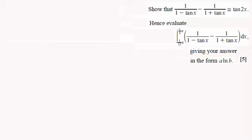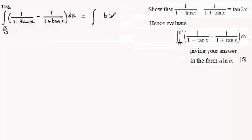If we just start by taking that integral, the integral of 1 over 1 minus tan x minus 1 over 1 plus tan x, integrated with respect to x between the limits pi upon 12 to pi upon 6. We were asked in the previous part to show that this identity was identical to tan 2x. So we can simplify this to the integral of tan 2x, integrated with respect to x between these limits pi upon 12 to pi upon 6.